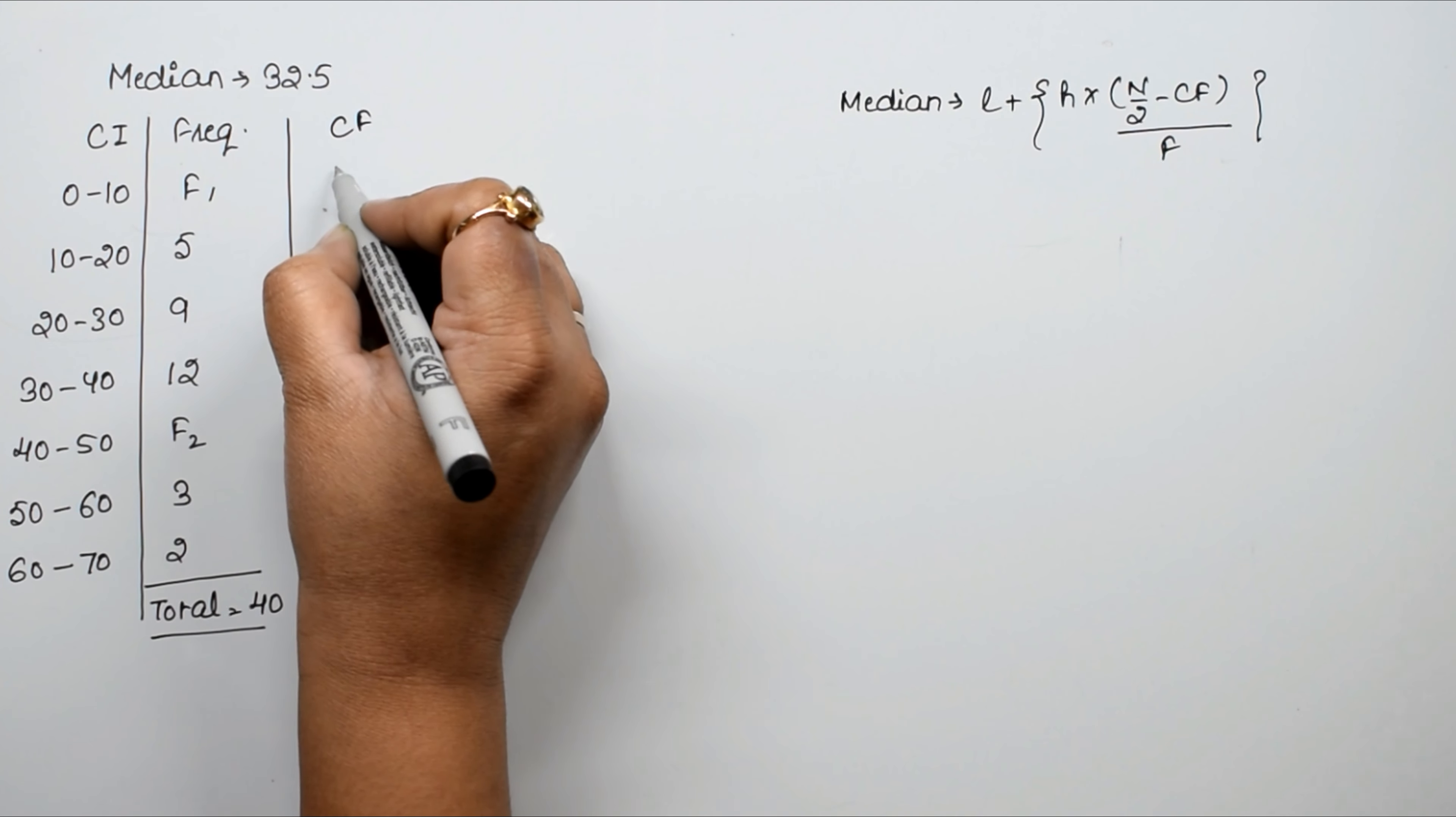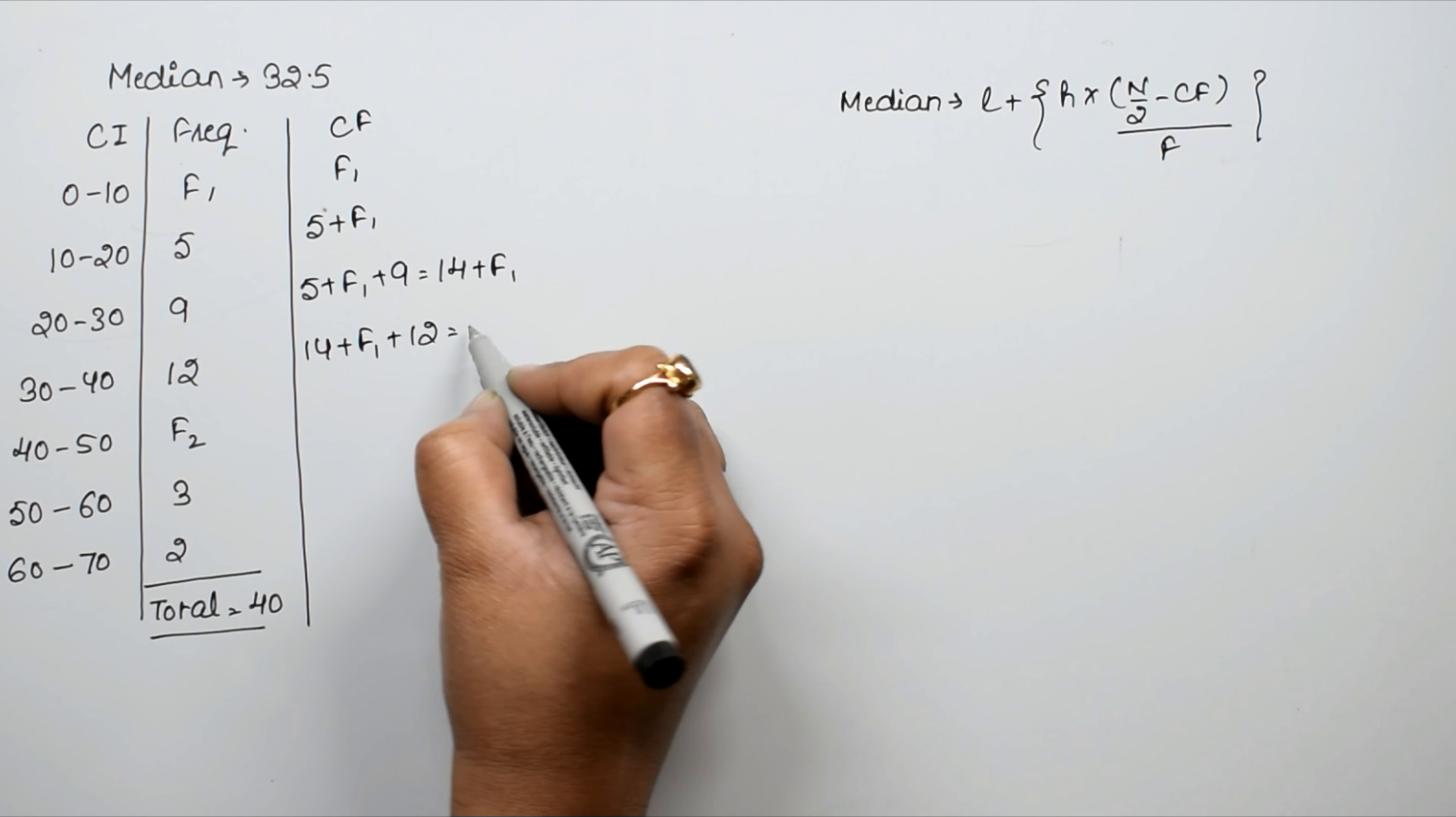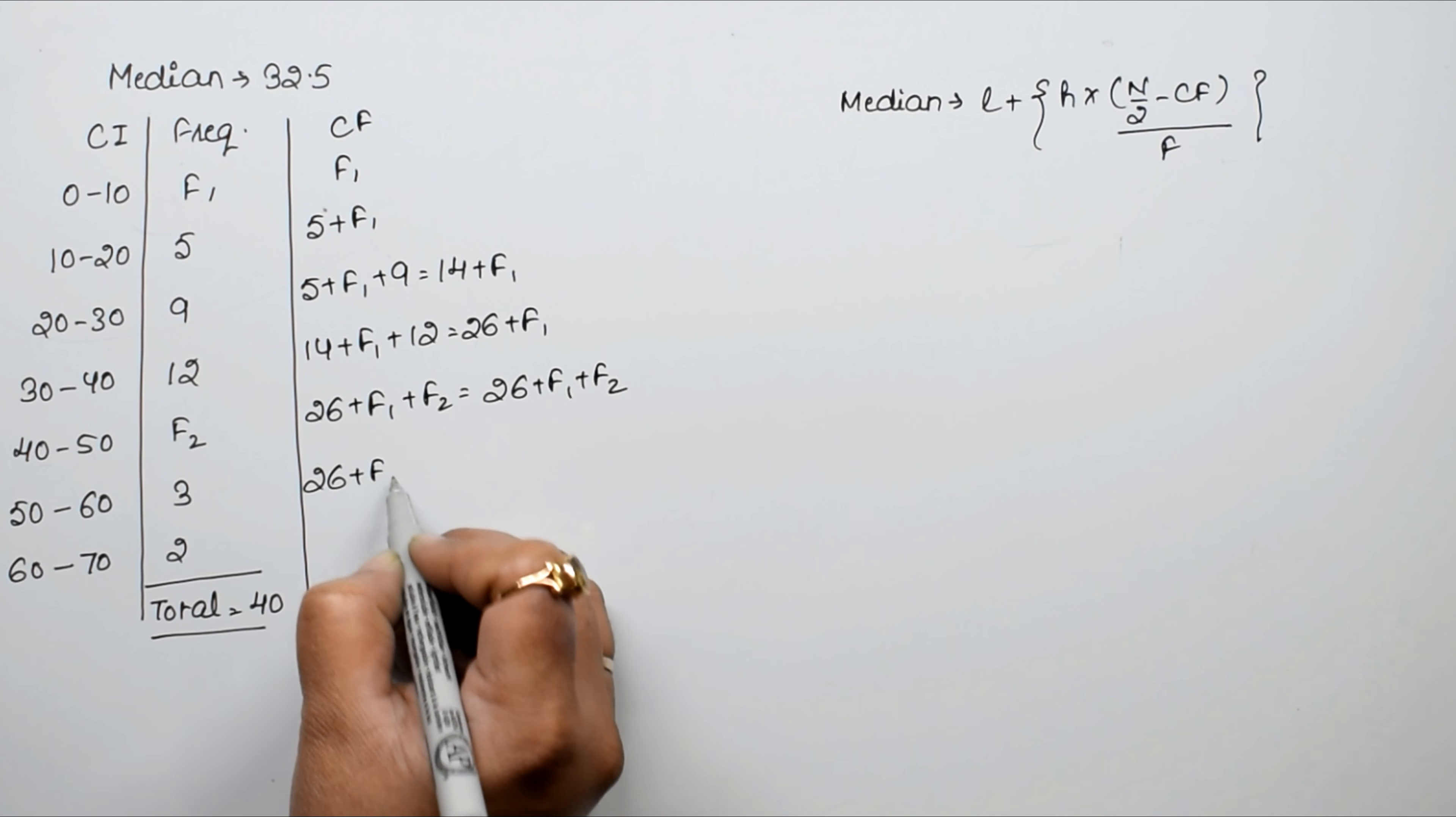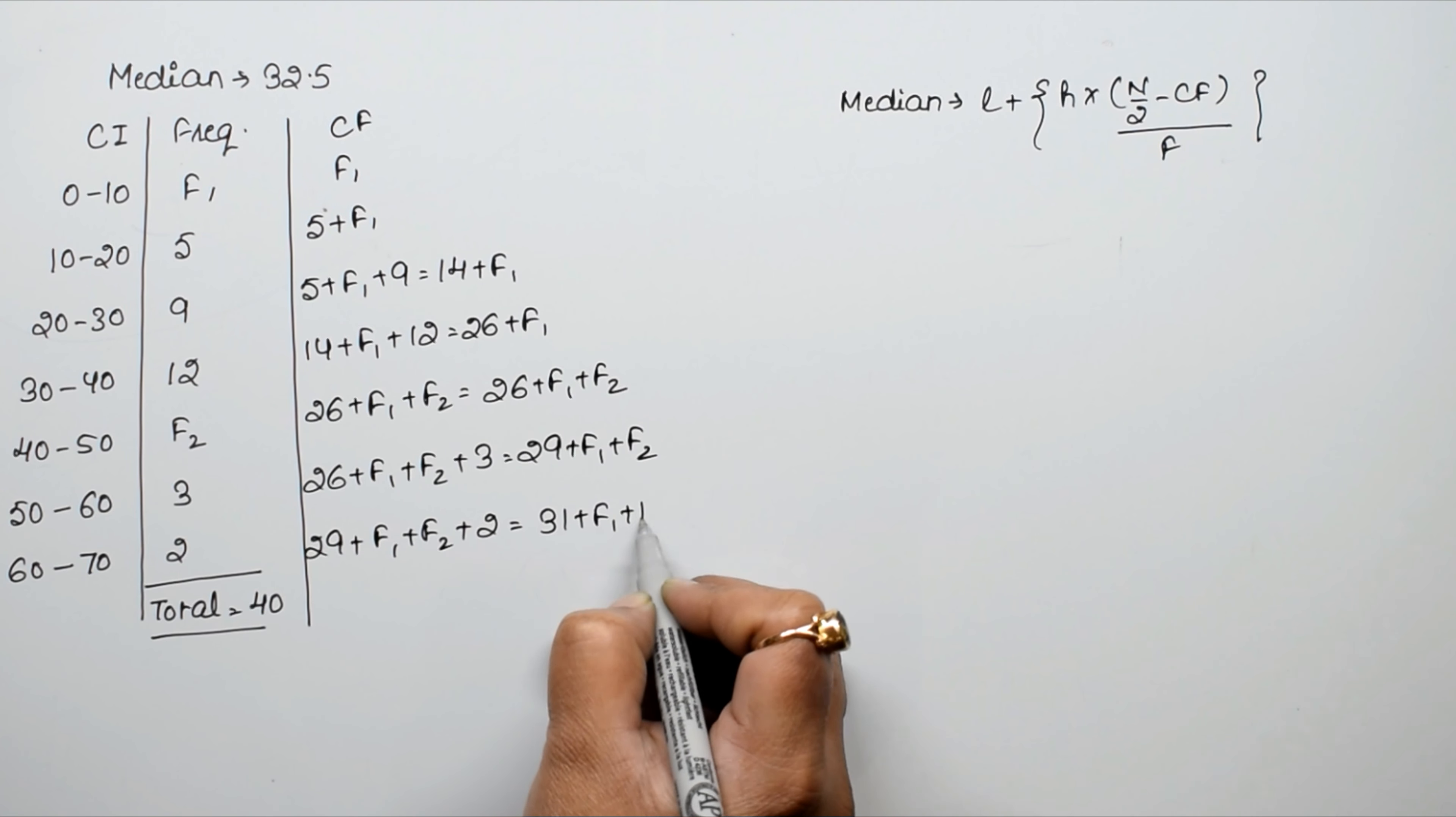First we calculate cumulative frequency. F1, then 5 plus F1, then 14 plus F1, then 26 plus F1, then 26 plus F1 plus F2, then 29 plus F1 plus F2, then 31 plus F1 plus F2.